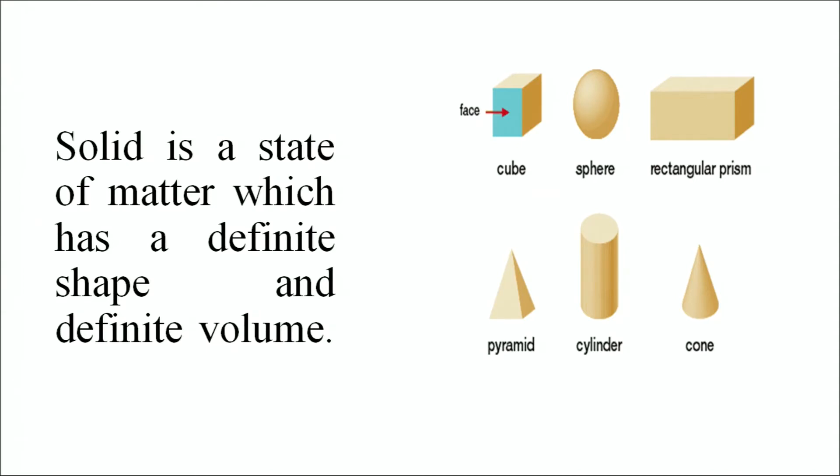To make this more clear, we have already shown some diagrams consisting of different shapes, and they are: the cube, the sphere, a rectangular prism, a pyramid, a cylinder, and a cone.